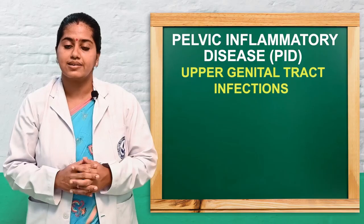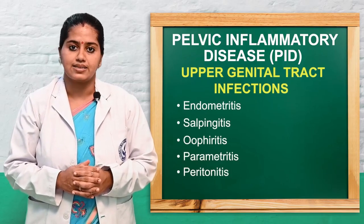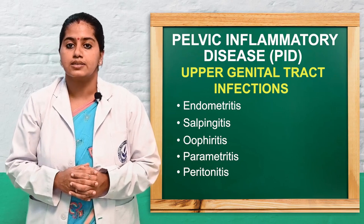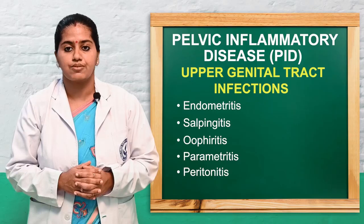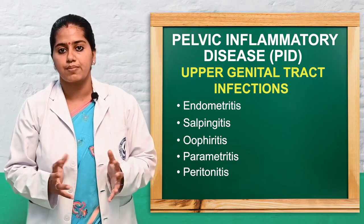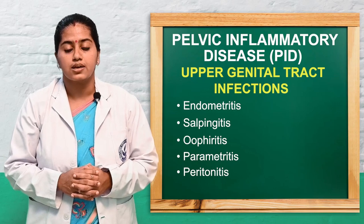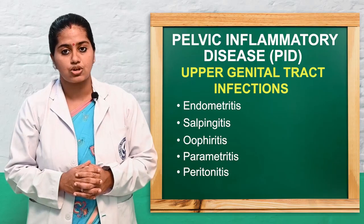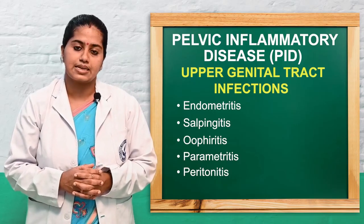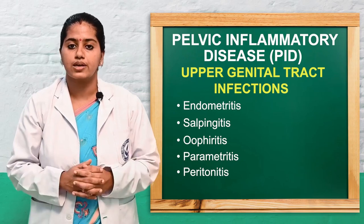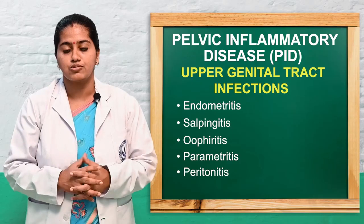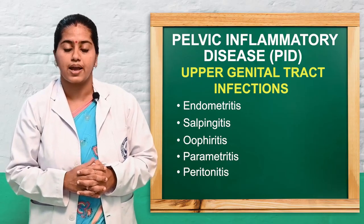The upper genital tract infections include: first, endometritis — infection and inflammation of the endometrium of the uterus; second, salpingitis — infection and inflammation of the fallopian tube or oviduct; third, oophoritis — infection and inflammation of the ovary; and fourth, perimetritis — infection and inflammation of the broad ligament and peritoneum layer of the uterus. Next is peritonitis — inflammation of the peritoneal cavity. Later complications include tubo-ovarian abscess, septicemia, rupture, and intrahepatic infection.